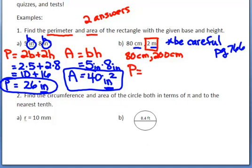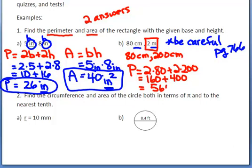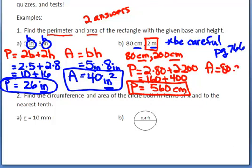Now I'm ready. Perimeter using 2B plus 2H: 2 times 80 plus 2 times 200 equals 160 plus 400 equals 560 centimeters. For area: base (80) times height (200) equals 8 times 2 with three zeros — 16,000. Don't forget your label: centimeters squared is your area.